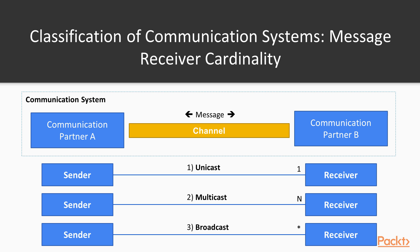This is a possible classification of a communication system based on message receiver cardinality. The simplest form is unicast — a one-to-one relation between sender and receiver. Multicast is next: one sender and n receivers, where those receivers are known. And the third form is broadcast, where you have one sender and an arbitrary number of receivers whose count is unknown.